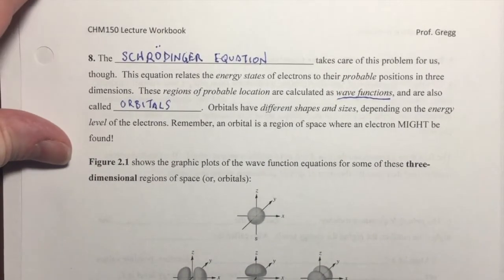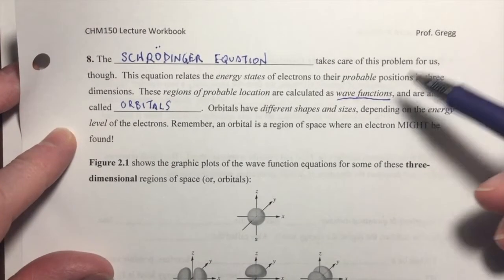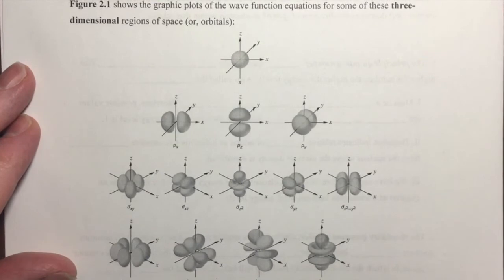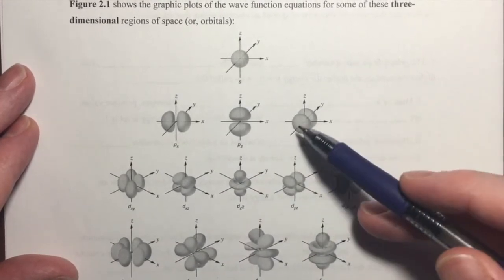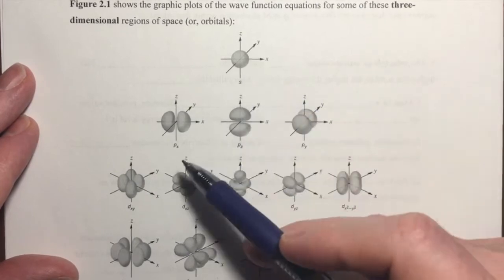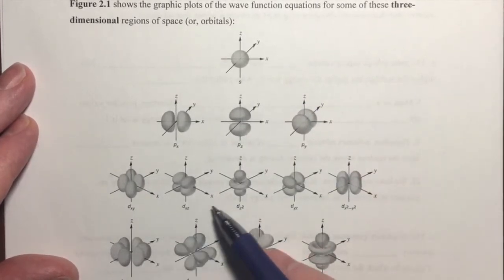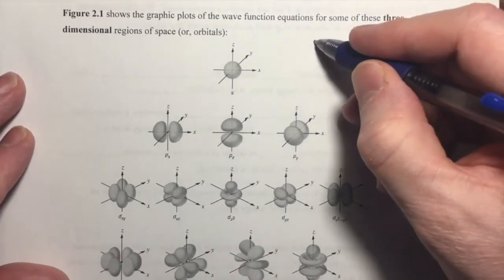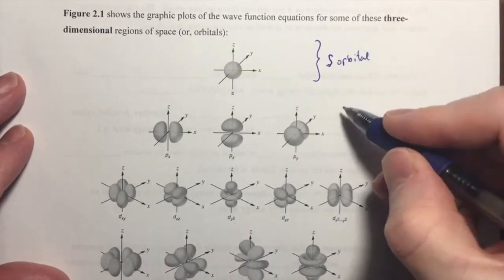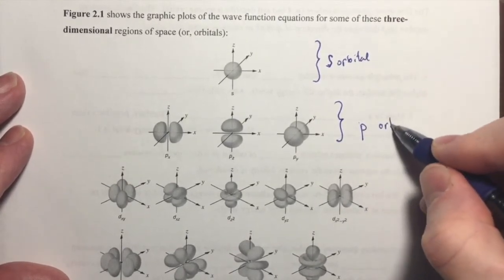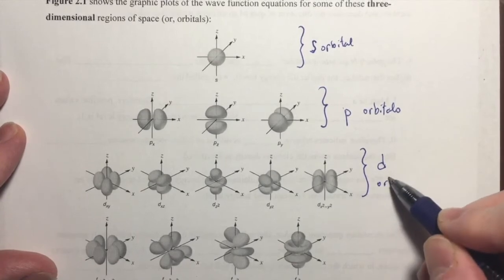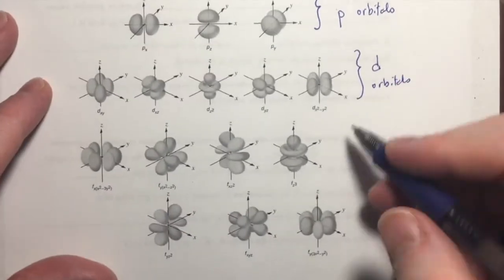And when you plot the graphs of the square of these wave functions, you get these three-dimensional graphic plots. And these three-dimensional graphic plots are the orbitals for electrons. It may be a little bit difficult to see this letter here, this is an s, and then px, pz, py. These are d orbitals, and these are f orbitals. So, this is an s orbital. These are p orbitals. These are d orbitals. And these are f orbitals.